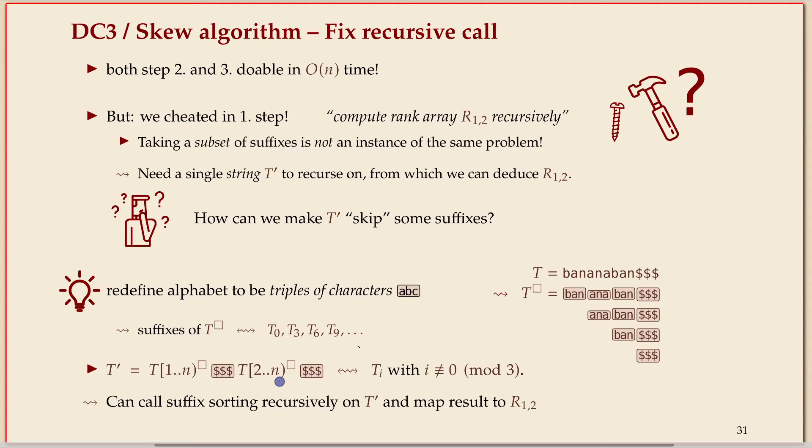So if you take those two together, the suffixes of this text T prime, those are exactly the suffixes that start at one or two modulo three. I have a bigger example for that on the next slide. That's pretty much the idea: we construct a new string that has a different alphabet which just magically happens to delete the suffixes we didn't like that we don't want to recurse on.